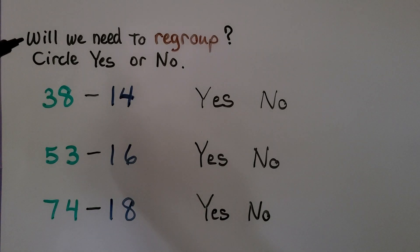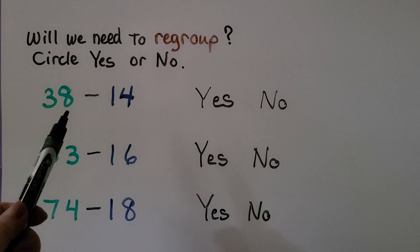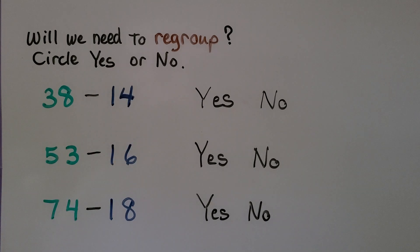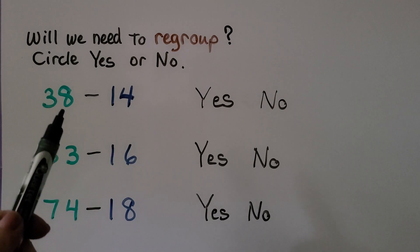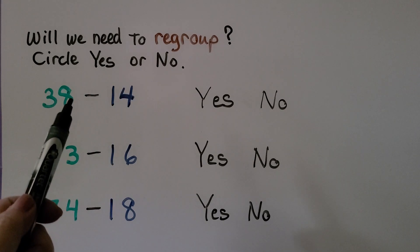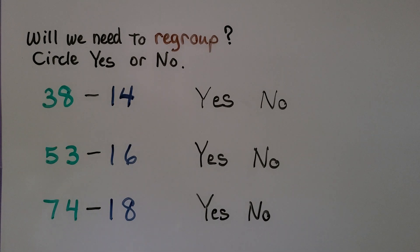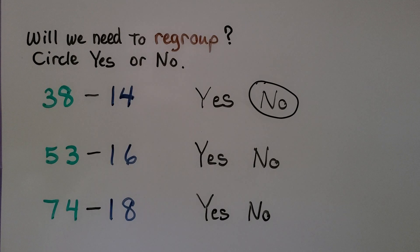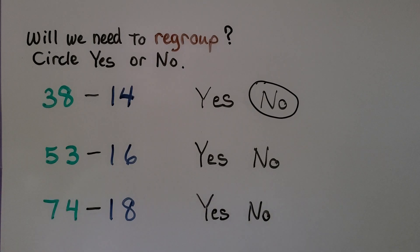Will we need to regroup? Circle yes or no. We have 38 minus 14. We look at the 1s place — can we take 4 1s away from 8 1s? Yes, we can. So we don't need to regroup. What about 53 minus 16? We look at the 1s place: this has a 3, this has a 6. Can we take 6 away from 3? No, we can't — there aren't enough 1s. So we would have to regroup from the 10s place. Will we need to regroup? Yes, we will.